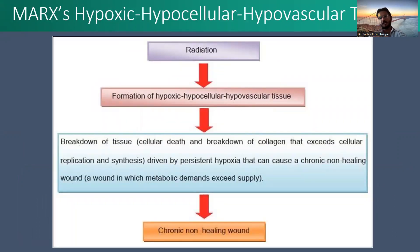Marx's hypoxic, hypocellular, and hypovascular theory stated that radiation produced hypoxic, hypocellular, and hypovascular tissue. This resulted in cellular death and breakdown of collagen, which in turn resulted in a chronic non-healing wound.